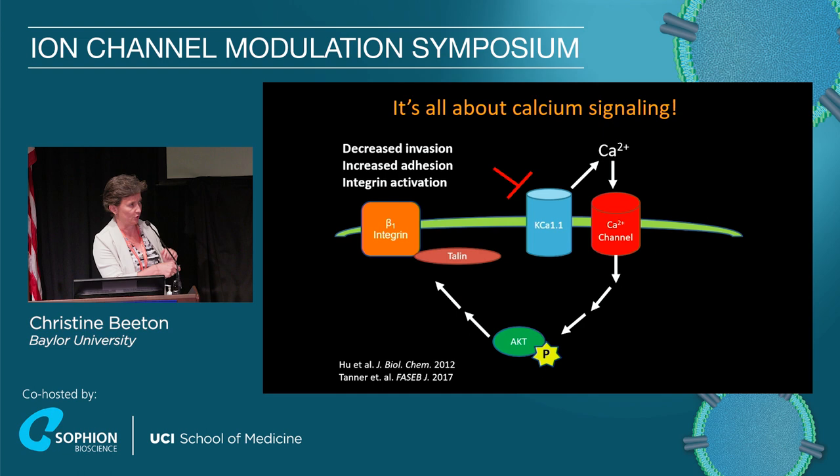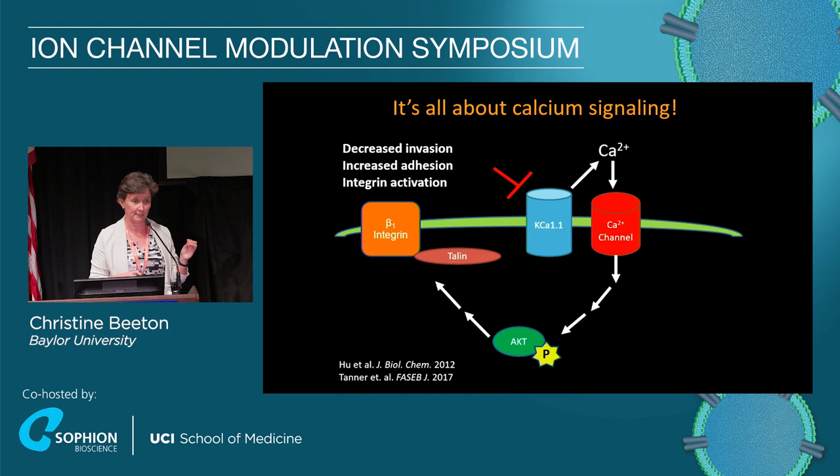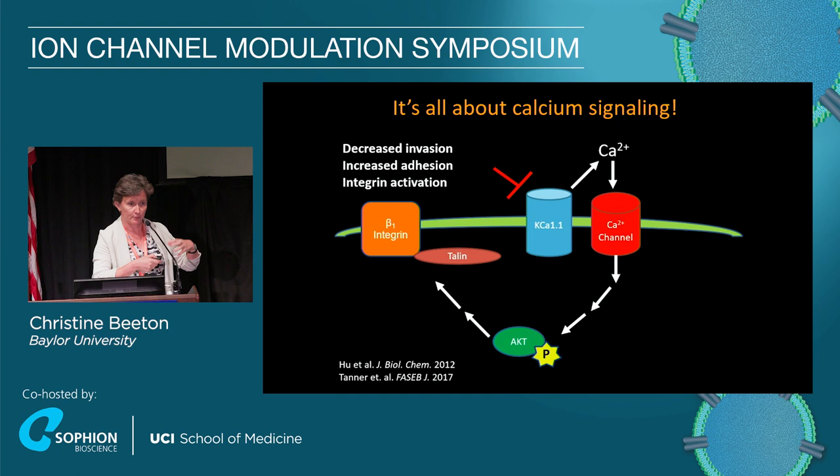This huge influx of calcium leads to phosphorylation and sustained activation of AKT for several hours. This leads to talin recruitment to beta-1 integrin, which prevents integrin recycling when the cell is trying to migrate. So the cell expresses more beta-1 integrin, the integrin is activated, cannot be recycled, and the cell sticks to the extracellular matrix and cannot move.